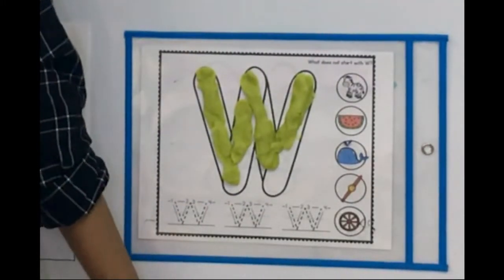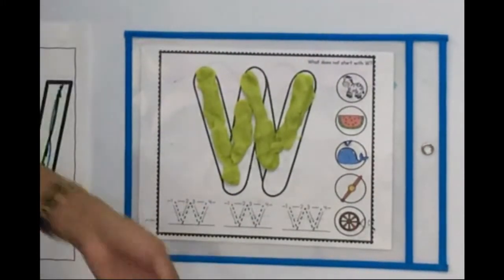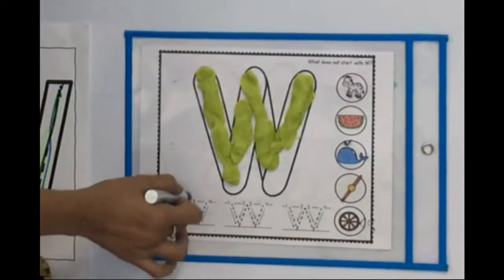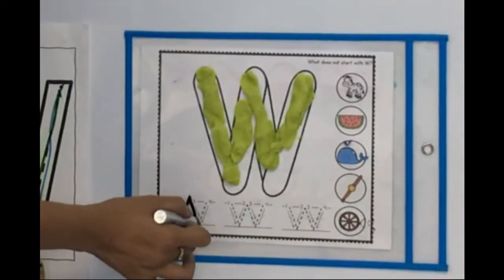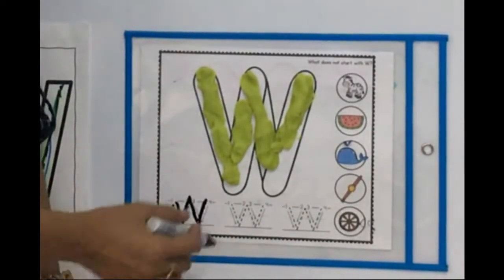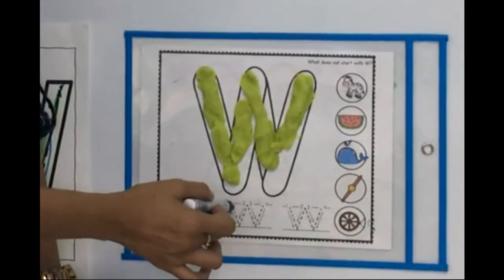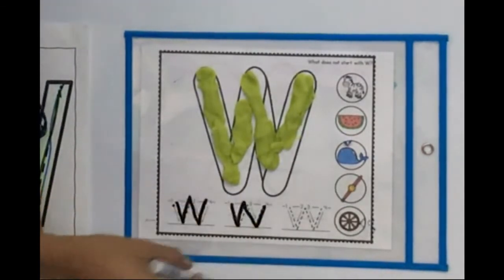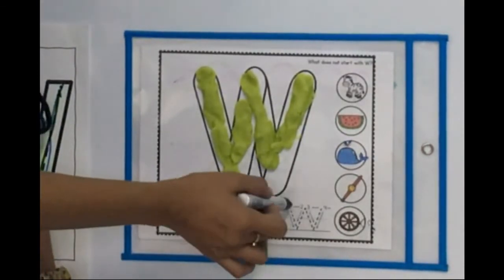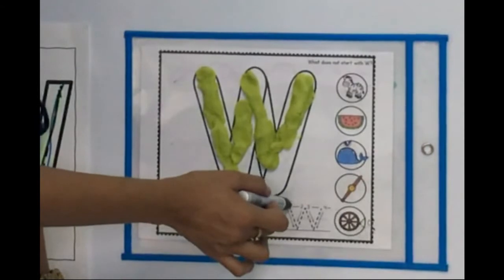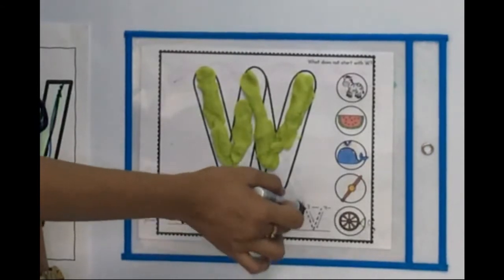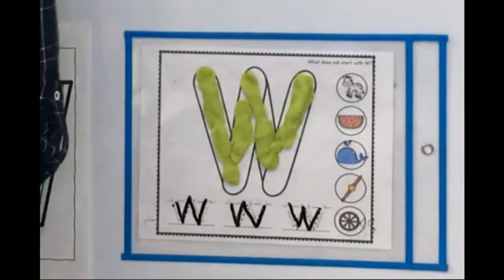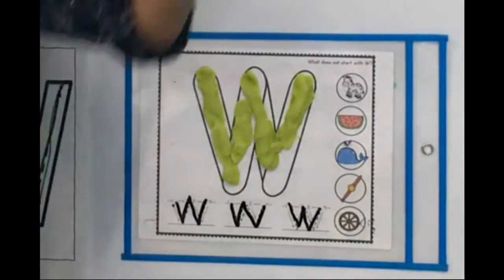How about we trace the letter at the bottom? Down and up, down and up — the capital letter W. Down and up, down and up — the capital letter W.